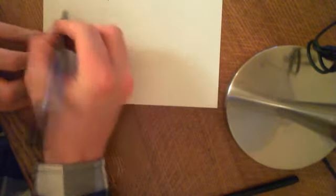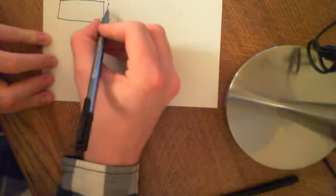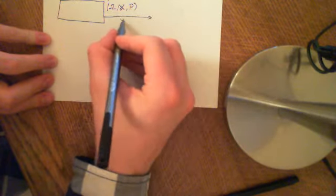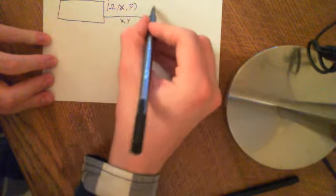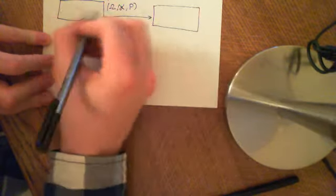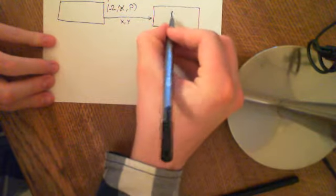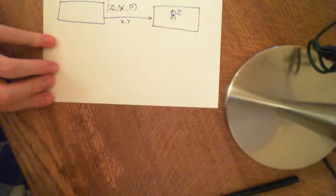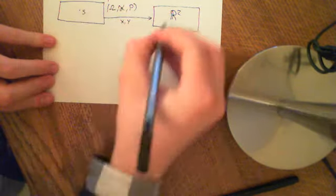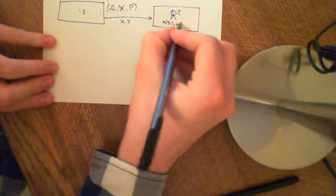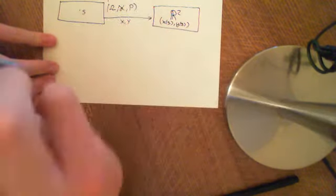The setup is this. You have an abstract probability space consisting of a sample space, a set of events, and a probability measure P. We then have a joint random variable X and Y, which is ascribing to every outcome in this abstract probability space an ordered pair — so it's mapping you onto R². An outcome, little s, is given two real numbers: X of s, Y of s. So it's ascribed an ordered pair, an element of R².